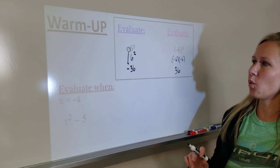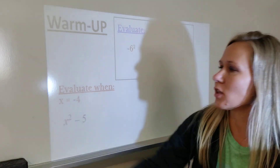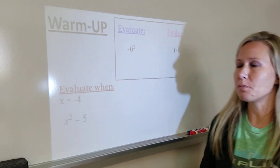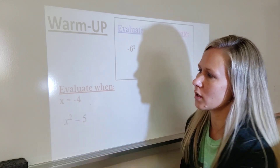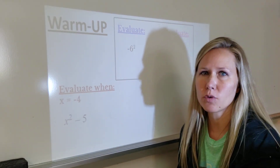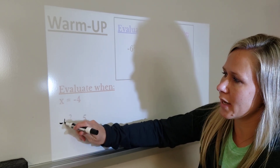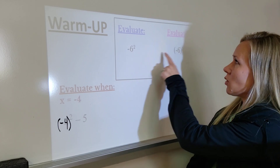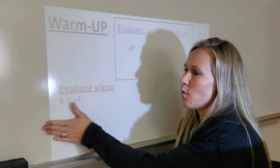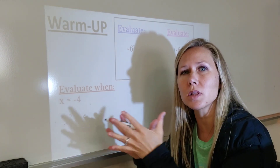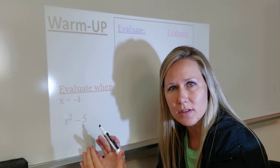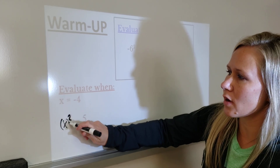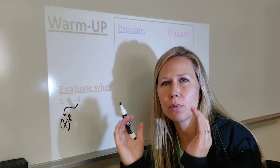Now with that being said, we're going to practice on this warm-up, evaluating an expression where we're given a negative number and plugging it in. Here it says x is equal to negative 4. Wherever I see x, I want to plug in a negative 4. Some students may just put a negative 4, while others will put parentheses around it, and it's going to give two very different answers. Any time you are substituting or plugging in a number, especially if it's negative, you're going to put parentheses wherever you're plugging the number in. Always parentheses.